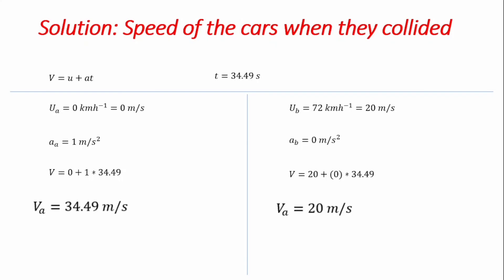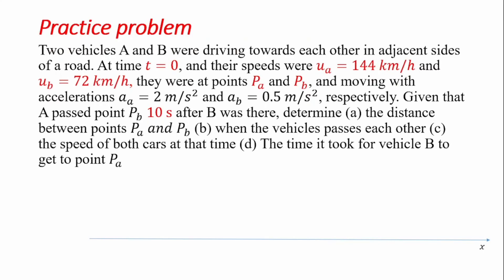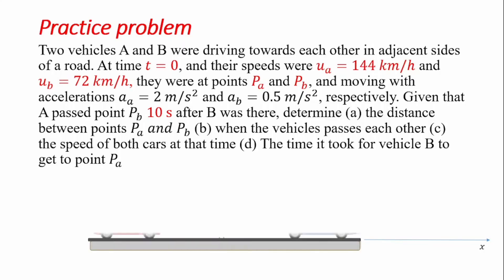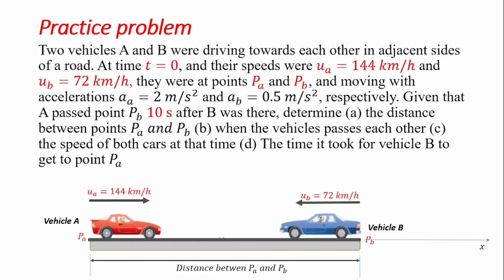We've now seen how the problem changes depending on the given conditions. I want to present a practice problem for you to work through. It is similar to the first example we solved, but with some variables altered: the velocities and accelerations of both vehicles are given, and you are asked to find the initial distance between pa and pb, the time when the vehicles pass each other, the speed of both vehicles at that time, and the time it took for vehicle B to reach point pa. Please try your hands on this, and thank you for watching. Do subscribe to the channel.